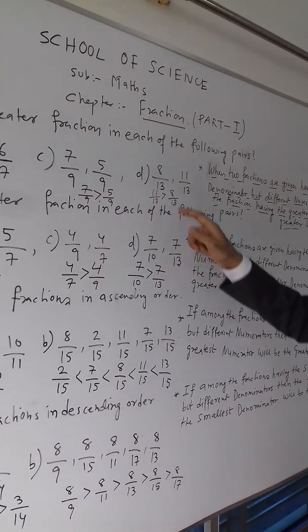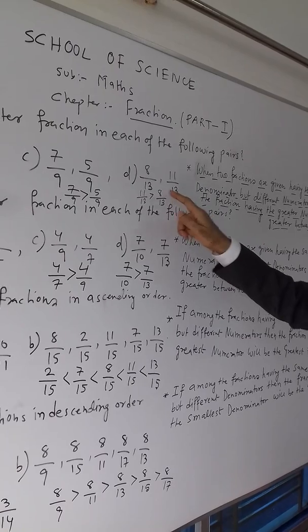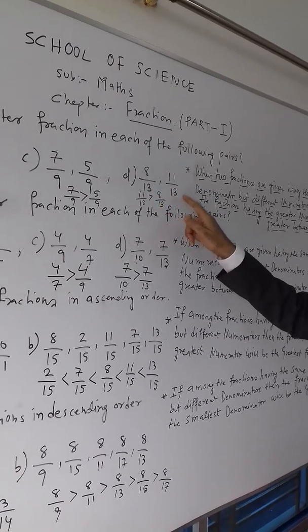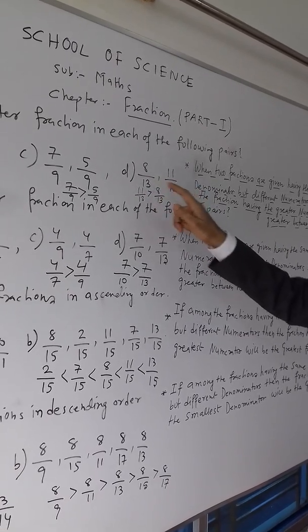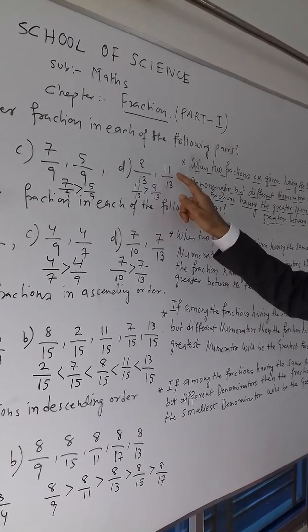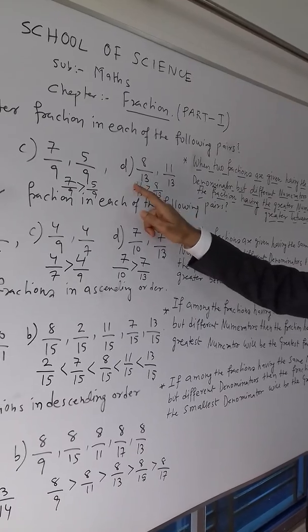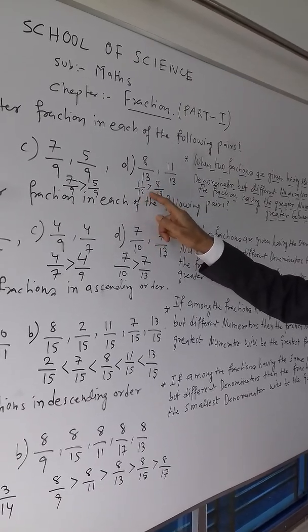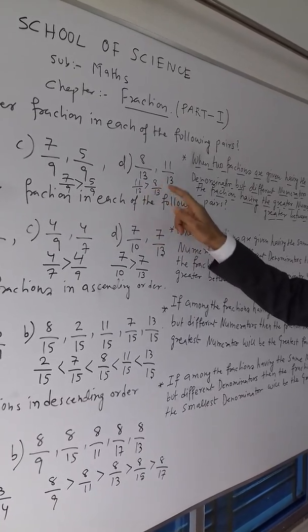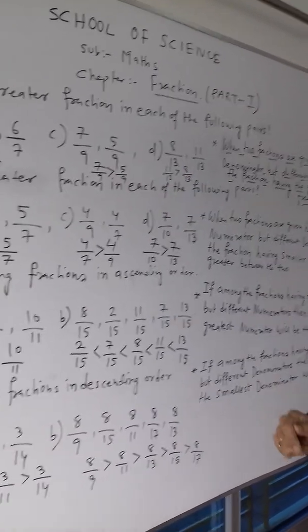Now here again: 8 by 13 and 11 by 13. Same denominator, so you must compare the numerator. 11 is greater than 8, so 11 by 13 is greater than 8 by 13.